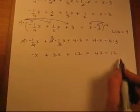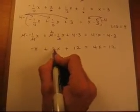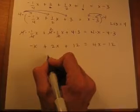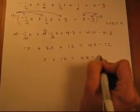Alright, good. There's no fractions at all. Just a regular linear equation. Negative x plus 2x, so we're going to collect like terms. That gives us x plus 12 equals 4x take away 12.